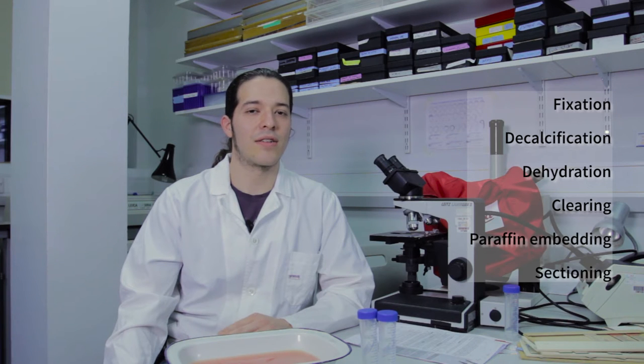The in situ hybridization technique starts with the sectioning of the tissue. In this video, I will show the paraffin embedding technique, which consists of fixation, decalcification, dehydration, clearing, paraffin embedding, and lastly, the sectioning.